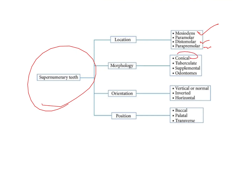Based on morphology, you have conical, which is the mesiodens. Tuberculate, which is a tubercle-like extension seen in the bone. Third is supplemental — a supernumerary tooth that very closely resembles the primary parent tooth. For example, the lateral incisor is said to be a supplemental supernumerary to the central incisor. And then you have odontomes, which are odontogenic tumors or hamartomas — multiple tooth-like structures which are attached, and they can be either complex or compound.